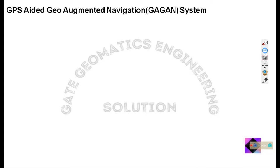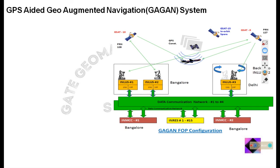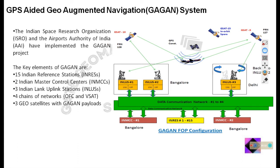You can go through the ISRO website to get information about the GAGAN system. This is the GAGAN architecture. It was developed by ISRO and the Airport Authority of India. Some of the key elements of GAGAN are mentioned there, and you can go through the ISRO website to get more information about this system.